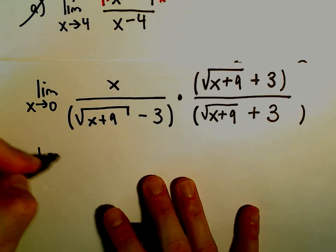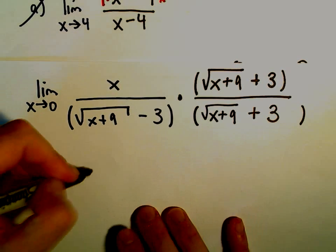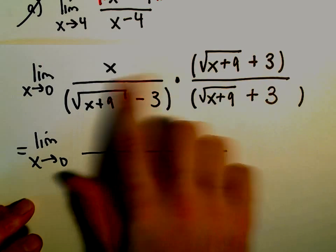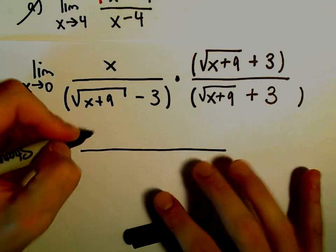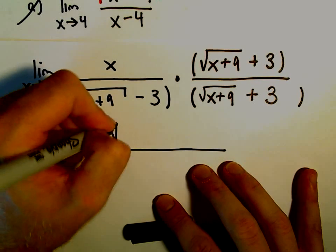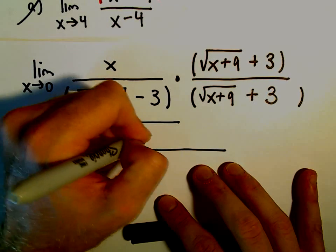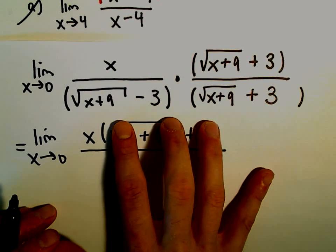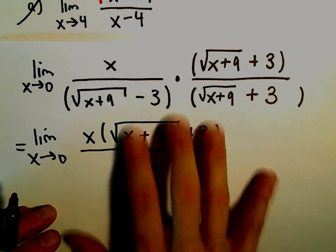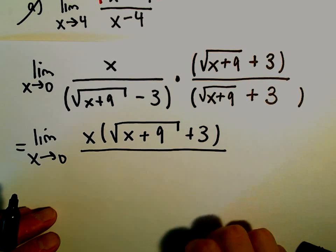So we've got the limit as x goes to 0. Some people are tempted to distribute out the x and things. You really don't have to in the numerator, so I'm just going to leave it alone. I tell people, unless you're positive there's a reason to do that, don't do it. But I am going to multiply things out in the denominator. That's the whole reason of multiplying by the conjugate in the first place.